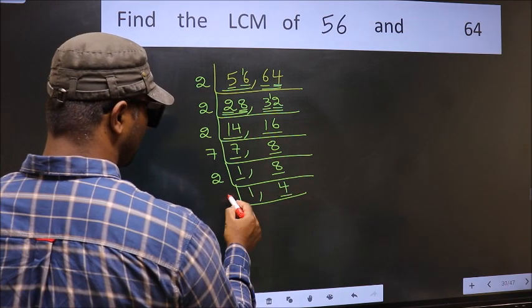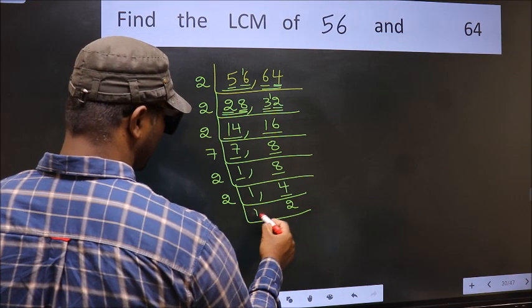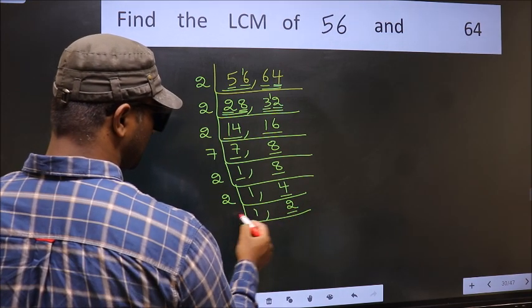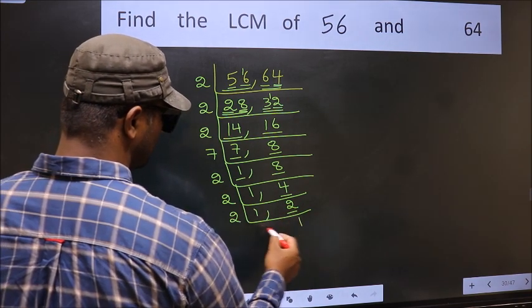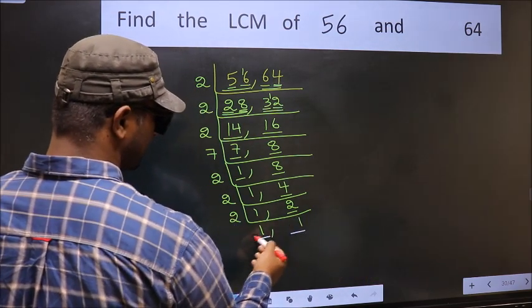Now here we have 4. 4 is 2 times 2 is 4. Now we have 2. 2 is a prime number. So 2 times 1 is 2. So we got 1 in both the places.